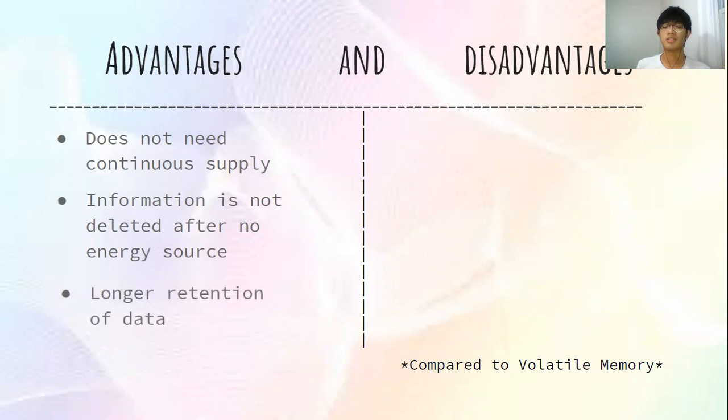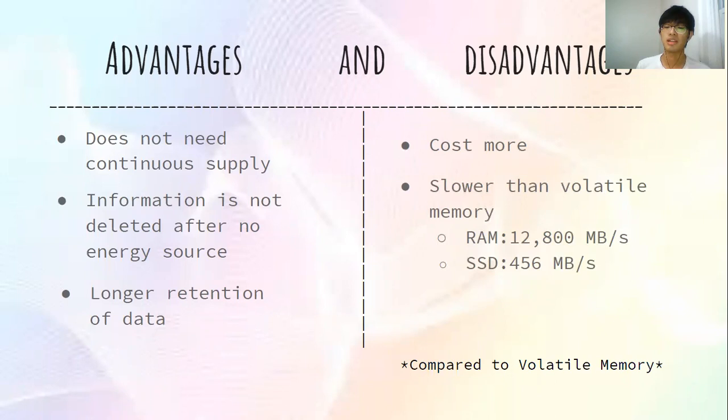However, the disadvantages of non-volatile memory are that it costs more than volatile memory and it is a lot slower — RAM, a volatile memory, runs at 12,800 megabytes per second, while an SSD, a non-volatile memory, runs at 456 megabytes per second. Lastly, it has a limited lifetime.